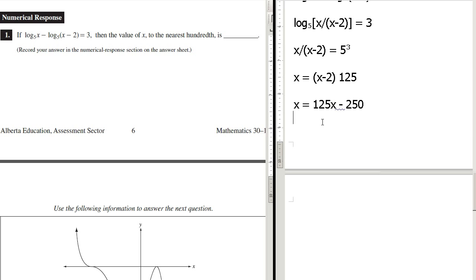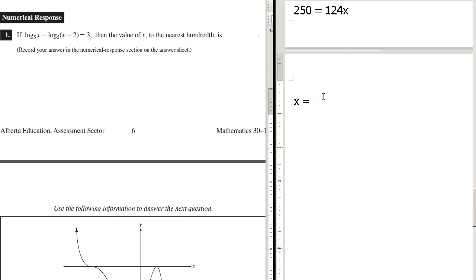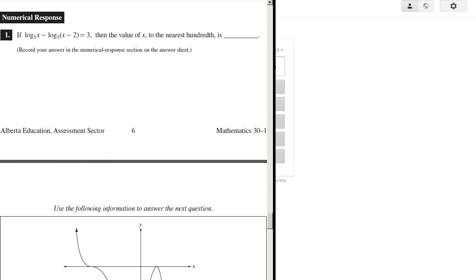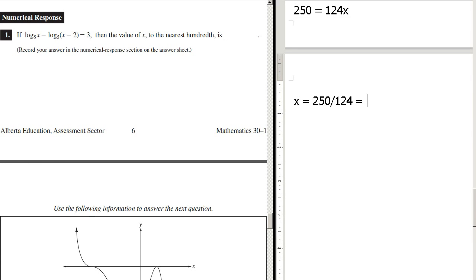And what we're left with, if we do two steps in one... Subtract the x on this side, add 250 on this side. We get 250 equals 124x. And finally, x equals 250 divided by 124. What do they want it to the nearest? Hundredth. So there we go. 2.02 is what we'd write. Alright.